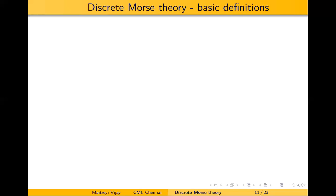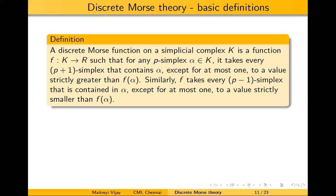Now we start with discrete Morse theory. Given a simplicial complex K, a discrete Morse function is a function from K to R such that for any p-simplex α: all but at most one co-dimension-one coface β of α satisfies f(β) > f(α), and all but at most one co-dimension-one face γ of α satisfies f(γ) < f(α). These are the two conditions for something to be a discrete Morse function.